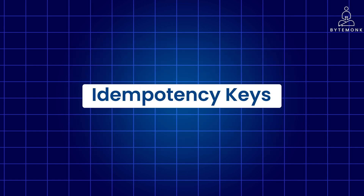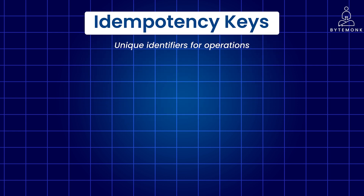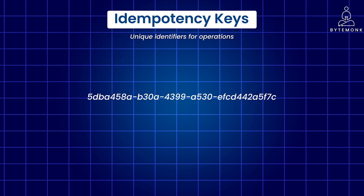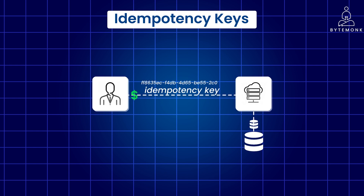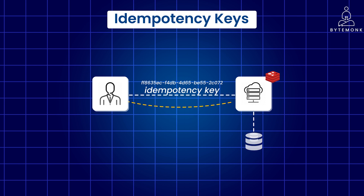Think of idempotency keys as unique identifiers for operations. They can be random strings, UUIDs, or any value that can distinguish one request from another. When a client sends a request with an idempotency key, the system stores it along with the operation result. If the same key is received again, the system can immediately return the stored result without re-executing the operation.